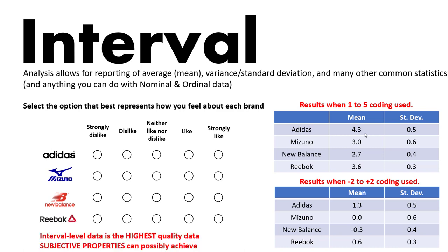This leads to an important observation: whenever we are measuring subjective properties in marketing research projects, interval level data is the absolute highest quality of data we can possibly acquire. It's impossible to gather ratio level data for subjective properties.